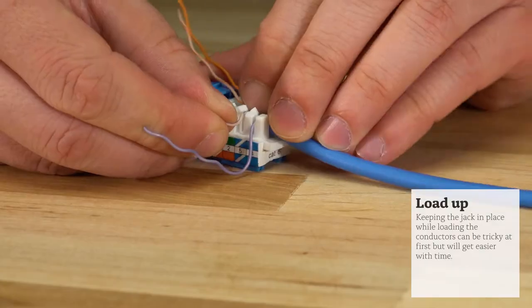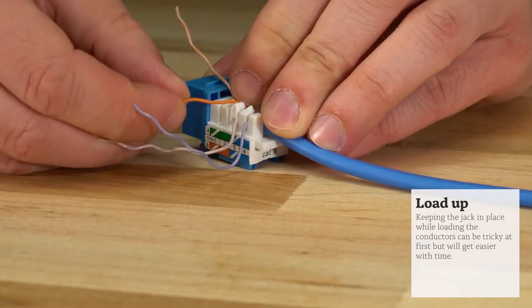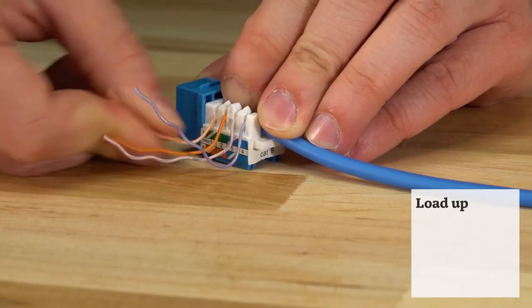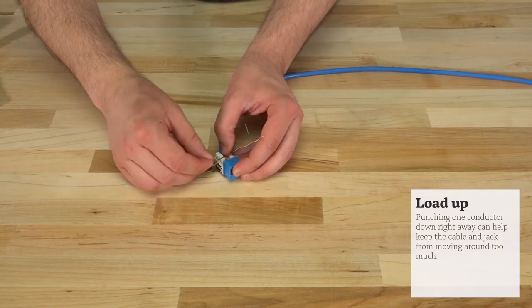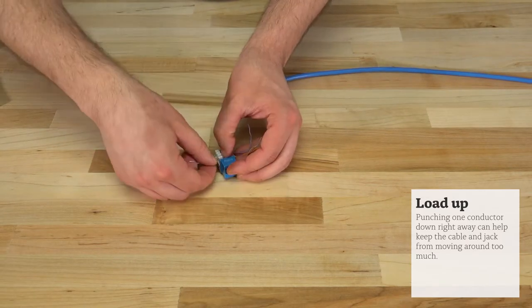Now it's time to load the wires into the keystone jack. Loading the wires is simple but you'll want to make sure you're applying pressure on both sides of the post. This ensures the wires get seated properly and won't pop out during the punching process.